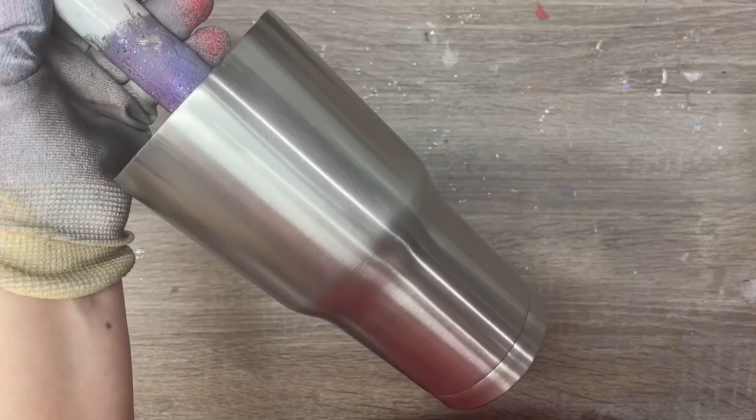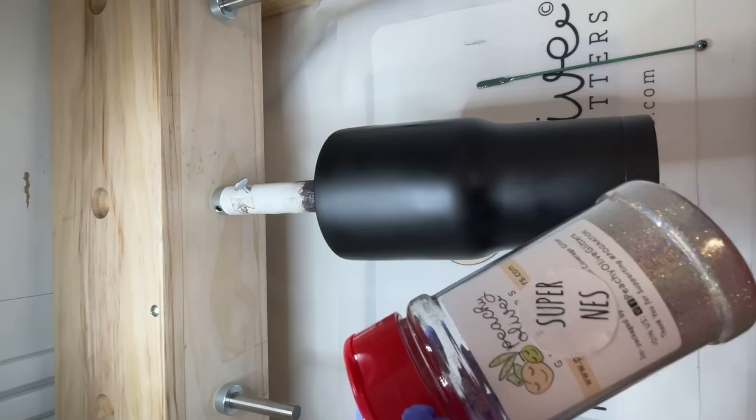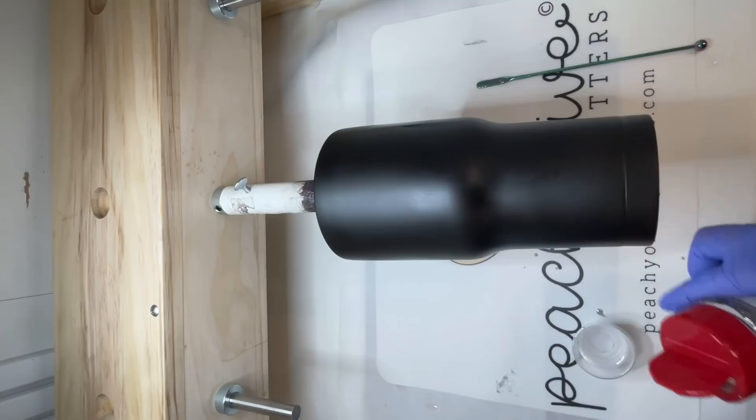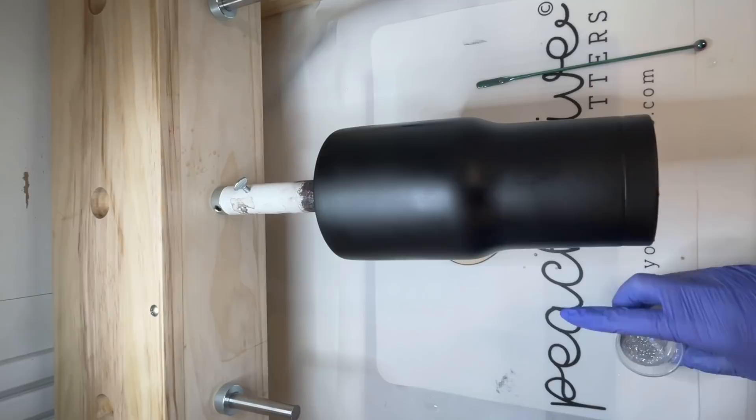As usual, we're starting with a fully prepped and sanded cup and I'm just going to spray paint it black using this Rust-Oleum flat black spray paint. You want to give it a couple coats and make sure you have nice even coverage because this black paint will be part of the design.